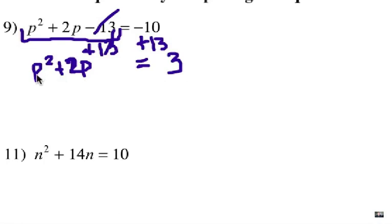Alright, so here's the question. Can I put a term in there, a third term, to make that a perfect square trinomial? And, of course, the answer is yes. And what I do is I take half of the 2p there to get 1p and just ignore the p. I take half of that and square it. So 1 times 1 is 1.